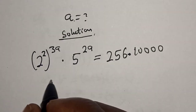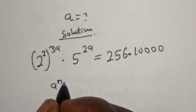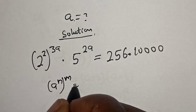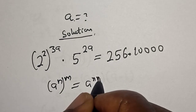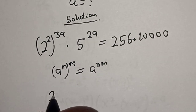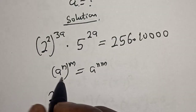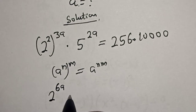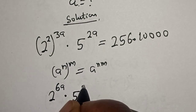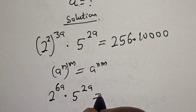Remember that a raised to power n raised to power m is equal to a raised to power n×m. So this becomes 2 raised to power 2 times 3a, that is 6a, multiplied by 5 raised to power 2a.